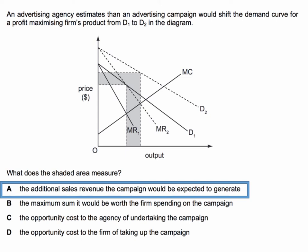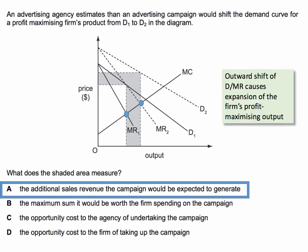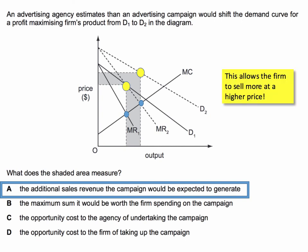The advertising campaign appears to have been successful — it shifted the demand curve from D1 to D2. That also means the marginal revenue curve will have shifted as well from MR1 to MR2. That allows the firm's profit-maximising output to expand at the intersection of marginal cost and marginal revenue. So they're selling more output and, crucially, they can now sell more at a higher price.